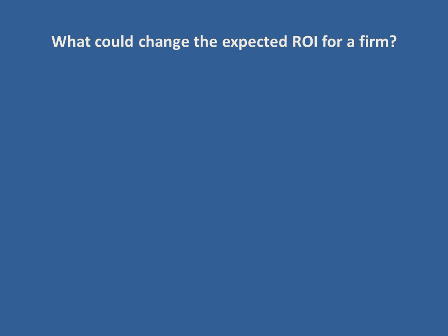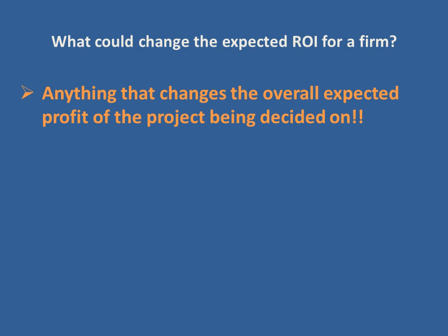Let's look at what could change the expected ROI for a firm. Think of it as anything that changes the overall expected profit of the project being decided on. The micro foundation of this model is that firms are making a decision of whether or not they should invest in a new project. When we make a decision in economics we're weighing costs and benefits — the cost of this new project is the interest I'm going to have to pay to take out a loan, and the benefit is the return on investment I expect to get from this project.